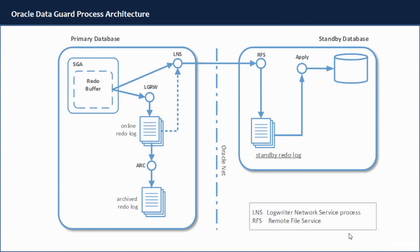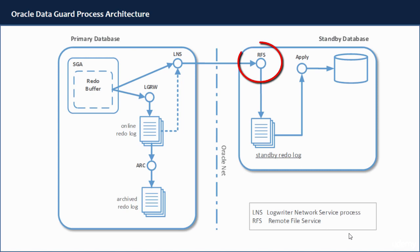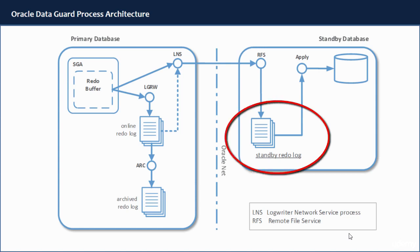When you have Oracle Data Guard configured in your database, you would have in the primary database an extra process called LNS, the Log Writer Network Service Process. This process reads from the RedLog buffer, exactly the same way the Log Writer does, and then sends these RedLog blocks to the standby database. On the standby database side, RFS is the process which receives the RedLog blocks from the LNS. RFS will receive the RedLog blocks and save them into standby RedLog files.